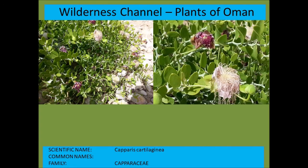Capparis cartilaginea — these are the flowers. Earlier you saw the big red fruit of this creeping plant. Very impressive flowers — typical of the Capparaceae.